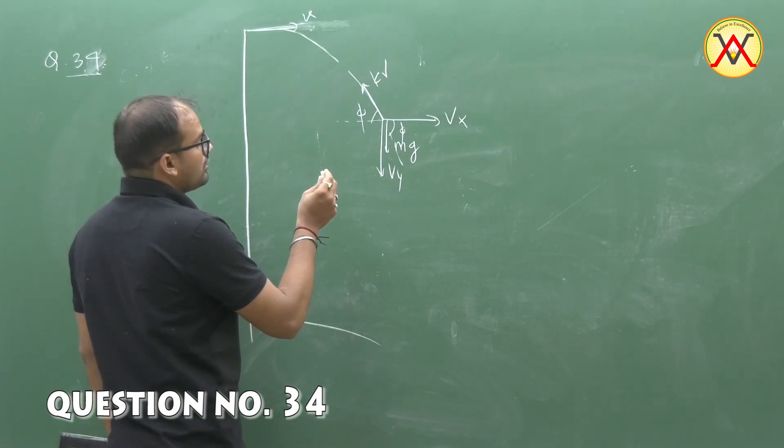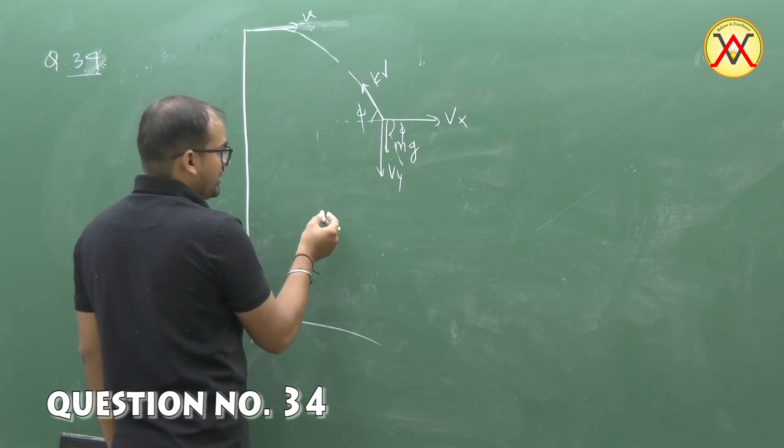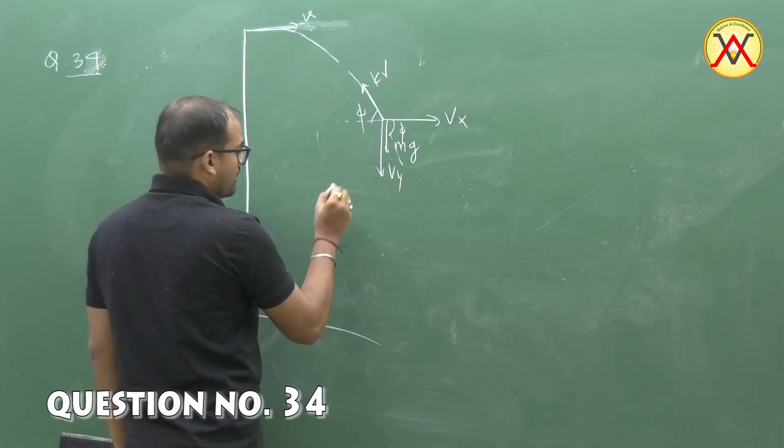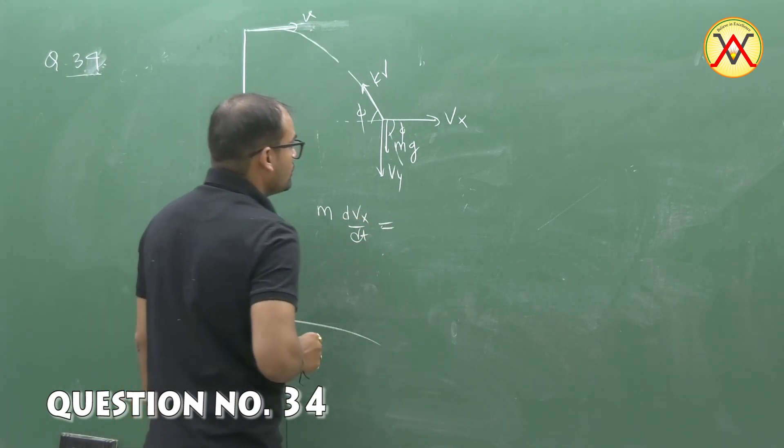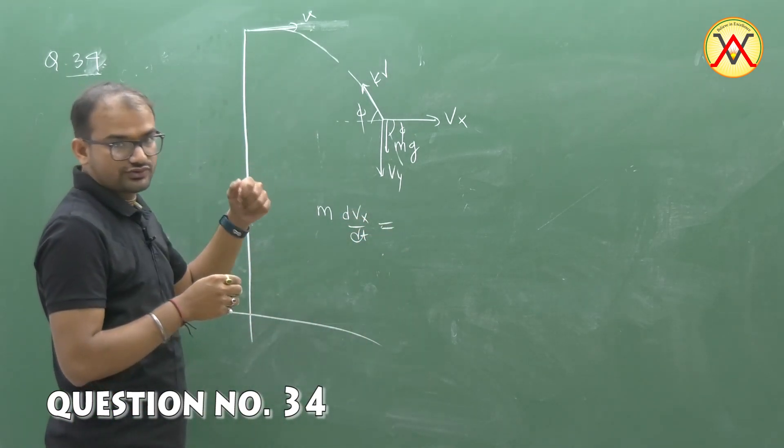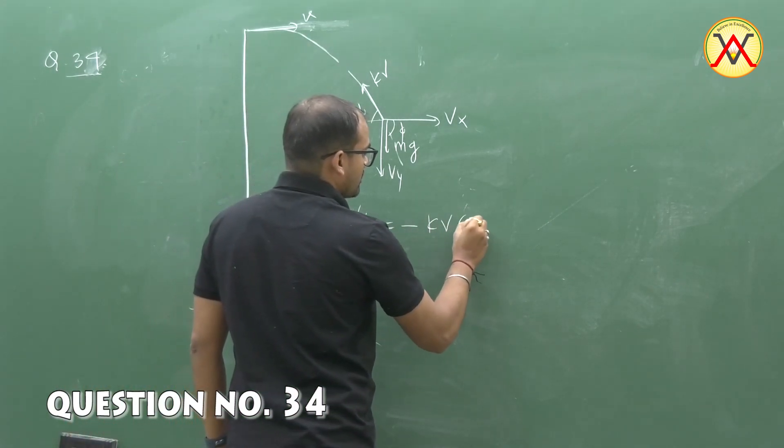If we want to consider the x component and y component of velocity, we can say that mdvx by dt equals the x component of the drag force minus kv cos phi.